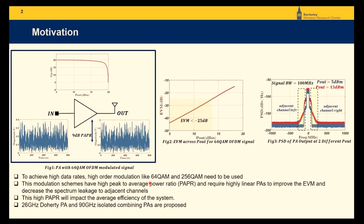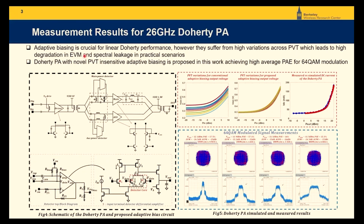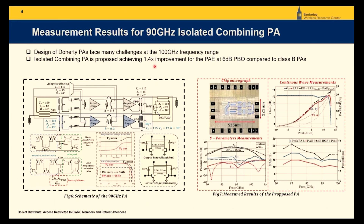High-efficiency power amplifiers for millimeter wave communication systems. To achieve high data rates, high-order modulation like 64-QAM is used. This modulation scheme has a high peak-to-average power ratio and requires highly linear PAs to improve EVM below specification and decrease spectral leakage to adjacent channels. This high peak-to-average ratio also impacts the average efficiency of the system. At 26 GHz, a Doherty PA, and at 90 GHz, an isolated-combining PA are proposed. For the Doherty PA, adaptive biasing is crucial for linear performance. However, they suffer from high variations across process-voltage-temperature (PVT), leading to high degradation in EVM and spectral leakage in practical scenarios. A Doherty PA with novel PVT-sensitive adaptive biasing is proposed to achieve high average power-added efficiency for 64-QAM modulation. For the 90 GHz isolated-combining PA, isolated combining technique achieves 1.4x improvement in power-added efficiency at 6 dB power back-off compared to class-B PAs.